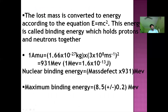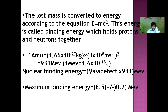This mass defect is converted into energy according to the equation E equals mc squared. This energy is known as binding energy, and it holds the protons and neutrons together. The value of 1 atomic mass unit times c squared equals 931 MeV.